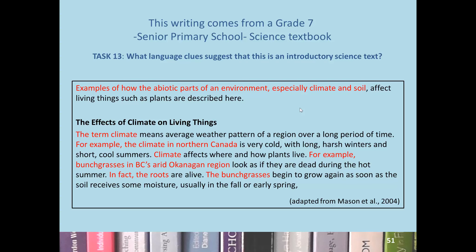For a piece of science writing, there is a large amount of concrete wording, including two embedded clauses: 'how the abiotic parts of an environment affect living things such as plants' and 'where and how plants live.' Although there are a few long noun groups with pre- and post-modification, these noun groups are not highly complex. The reason we point this out is that for higher levels of academic exchange, we need to be able to pack more information.